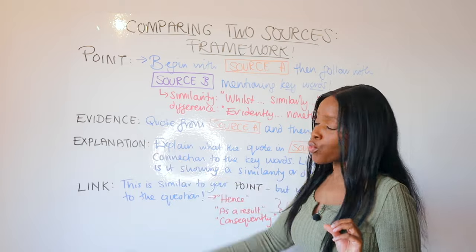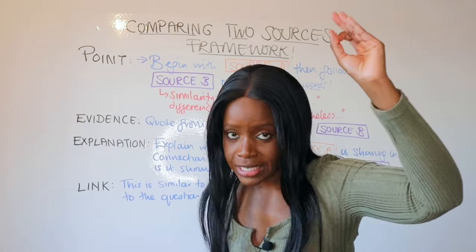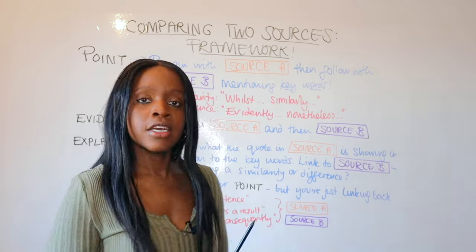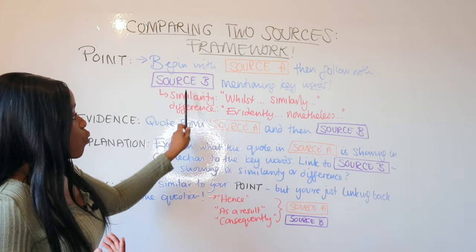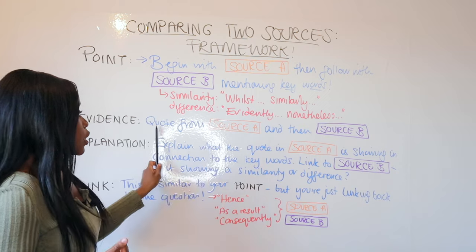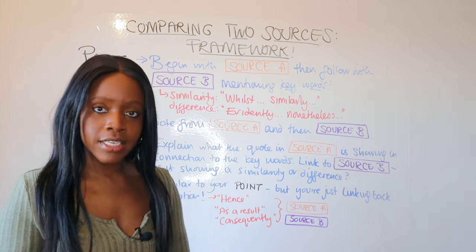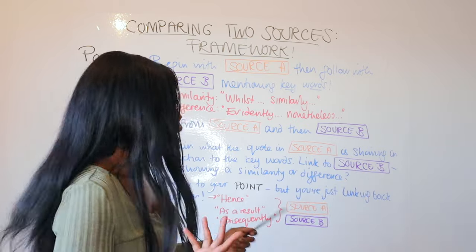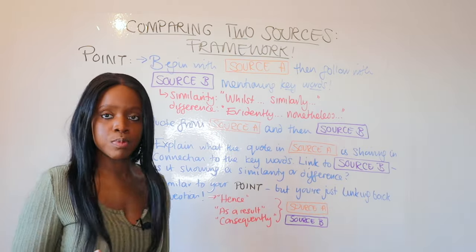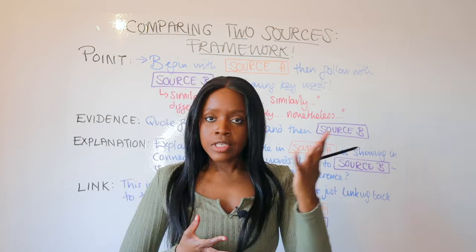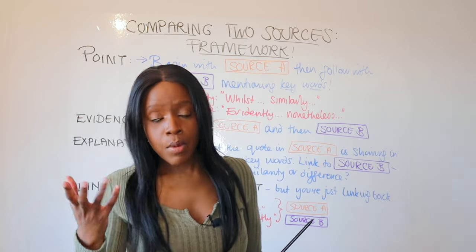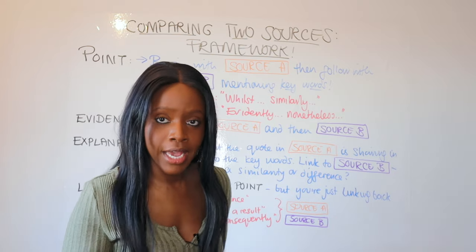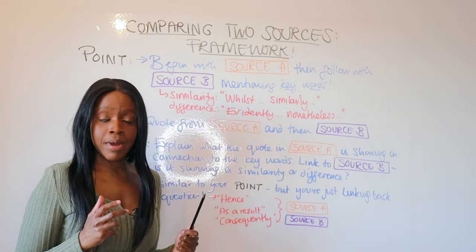Of course, you then follow on with evidence — step two. Don't put evidence in the first step; you put evidence in its own separate section. To support whether they're similar or different, you firstly quote from source A: 'This is stated in source A when the writer states [quote].' Then you follow on with source B, again using words like 'similarly,' 'likewise,' or 'however,' 'on the other hand,' then include your source B quote. That's step number two in your comparison paragraph.